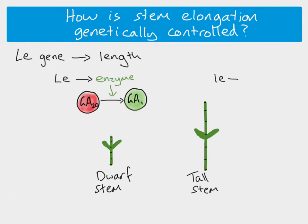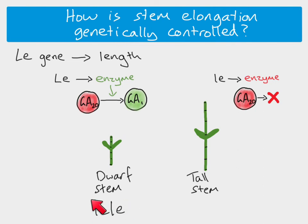The recessive le allele codes for a non-functional enzyme, so this enzyme doesn't work. As a result, the inactive gibberellin does not continue along the pathway to become the active form — no active gibberellin is produced. Therefore, a plant with the homozygous recessive genotype (le le) will not produce any active gibberellin, resulting in a dwarf stem.